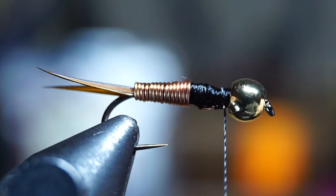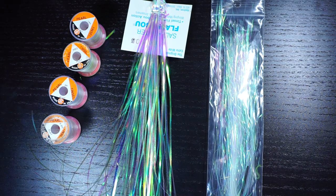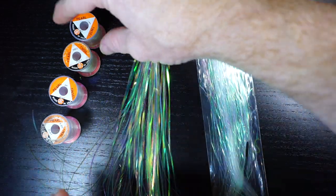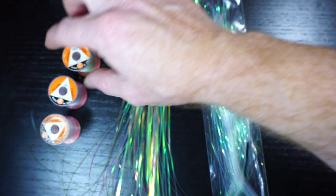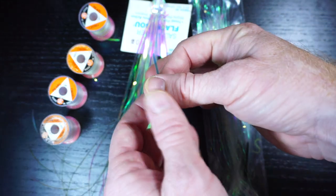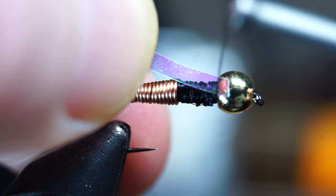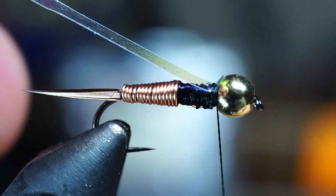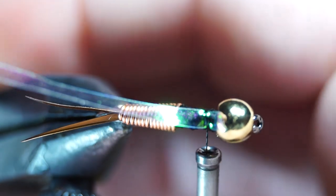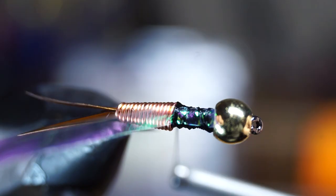Make wraps with thread to smooth out the thorax area. Now we need some mylar flash. For smaller copper johns you can use a fine flashabu. Mylar also comes in spools with different thicknesses. For today's fly I'm using the saltwater sized flashabu which is about the same thickness as a large sized spooled mylar. One strand will tie quite a few flies though. Tie in the flashabu so it's directly on top of the fly. If it's not directly on top of the fly it will not fold forward correctly when you finish off your thorax.